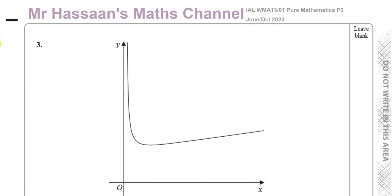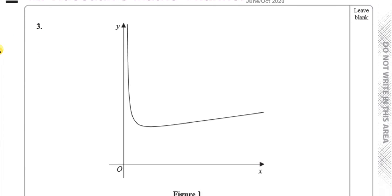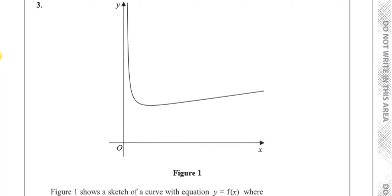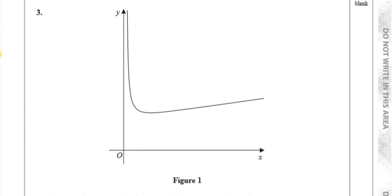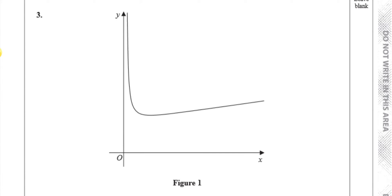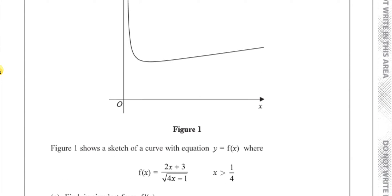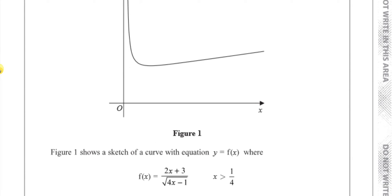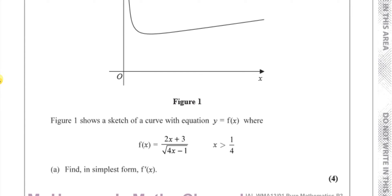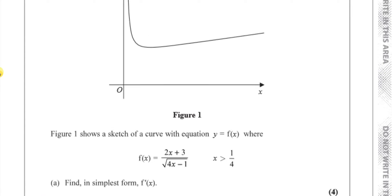This question is about this curve shown in figure one, with the equation y equals f of x. They've told us that f of x equals 2x plus 3 over the square root of 4x minus 1, and x is greater than a quarter.